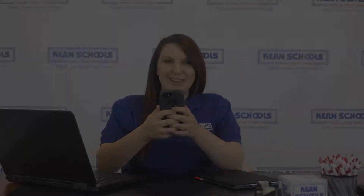Logging into the new DataMobile for the first time is easy and secure. First, you'll need to update to the all-new DataMobile. If you are an Android user, you'll need to delete your current DataMobile app and search in the Google Play Store for CurrentSchools DataMobile to download the new app. If you are an iPhone user, you can simply update to the newest version of CurrentSchools DataMobile.